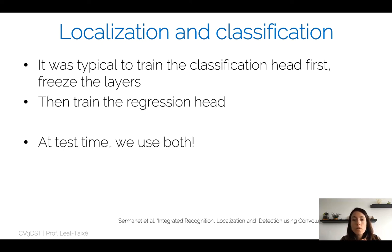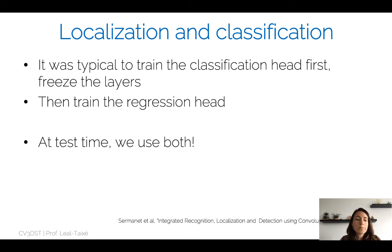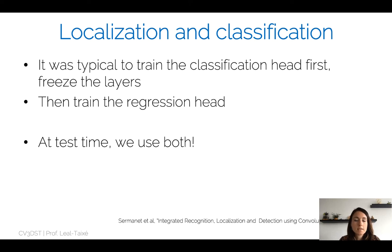Before the new object detectors we will present were introduced, it was typical to train these two heads separately — for example, train the classification head first, then freeze those layers, then train the regression head and iterate. At test time, one would use both. It was hard to know how to train two heads simultaneously. Nowadays, we train neural networks with multiple heads all at the same time, simply balancing the different losses.